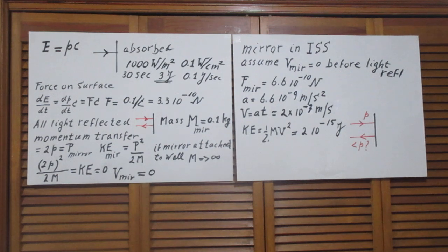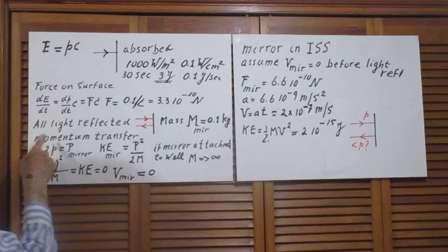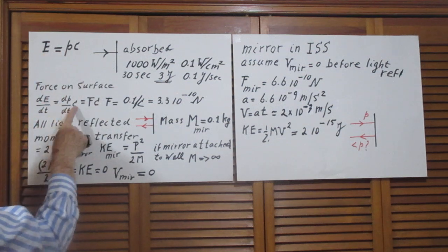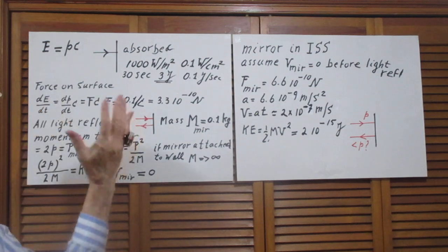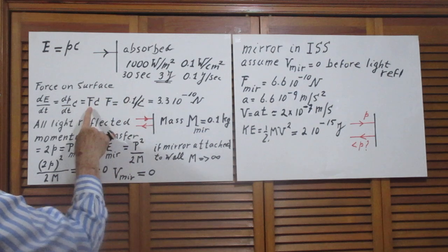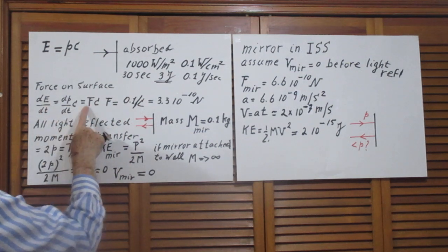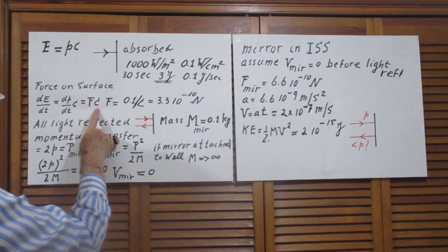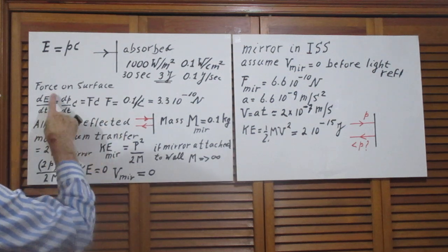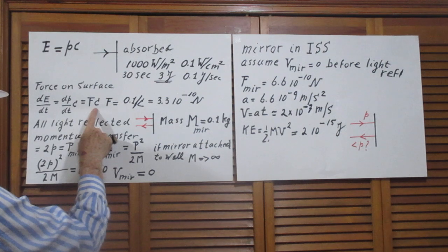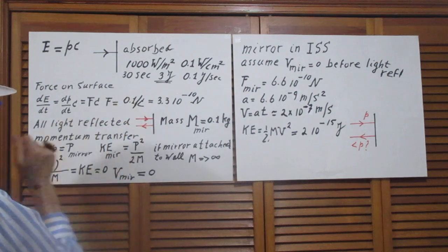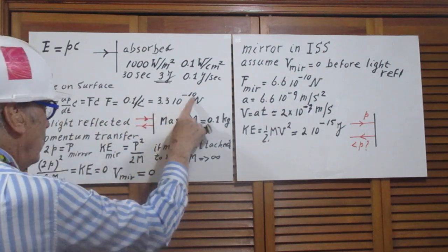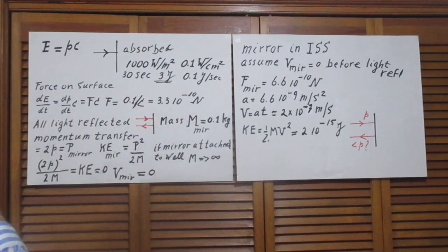What now is the force on the surface? That already becomes more interesting. Take the derivative on both sides, then I get dE/dt is dP/dt times C. But dP/dt as you should remember from 801 is a force. So dE/dt is the force times C, so the force is dE/dt divided by C. But dE/dt was 0.1 joules per second, so it's 0.1 divided by C, which is 3.3 times 10 to the minus 10 newtons.